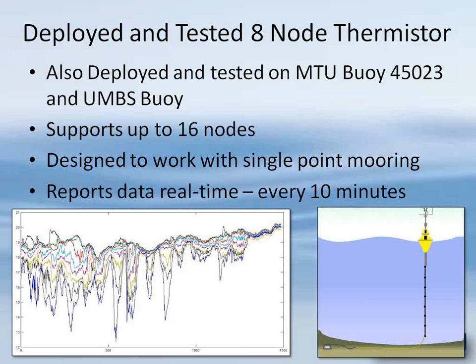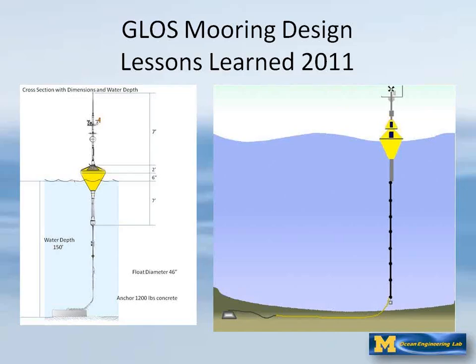A little bit on the thermistor string, which just plugs and plays through the buoy. It is capable of supporting up to 16 nodes; we typically do eight. Each node independently supplies a measurement of water temperature at that depth once every ten minutes. We try to get the bottom node very close to the bottom for a true indication of temperatures throughout the entire water column. This is done as part of GLOSS requirements — a significant portion of the U.S. and Canadian population drinks Great Lakes water, and the thermal structure within the water column is extremely important to water quality, taste, and odor.